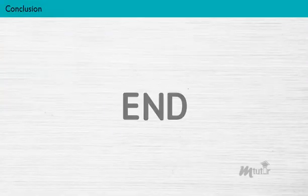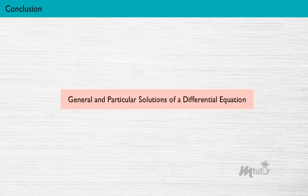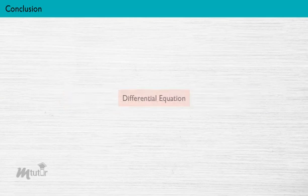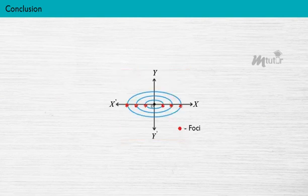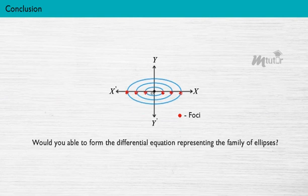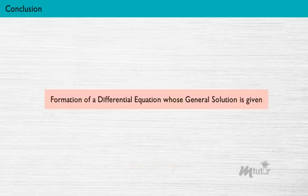Conclusion. Thus, we come to the end of our session. I believe that you are clear about the general and particular solutions of a differential equation. Can you derive the differential equation from the given general solution? For example, if you know the foci on the x-axis and center at the origin, would you be able to form the differential equation representing the family of ellipses? Yes, you can form the differential equation from the general solution. In our next session, let's learn how to derive those equations in detail.